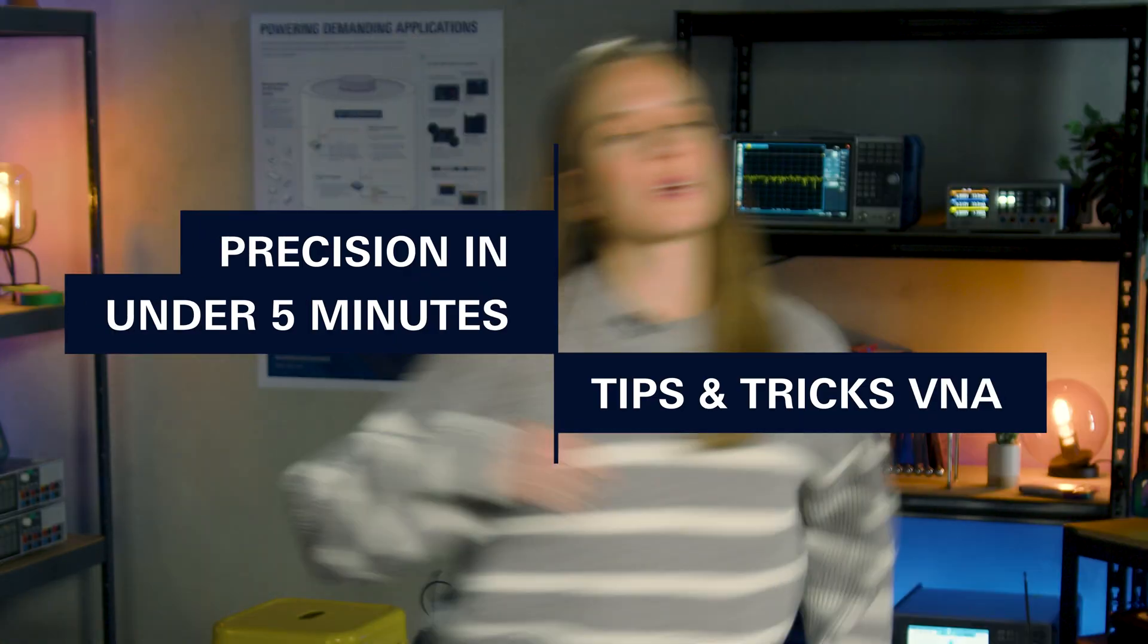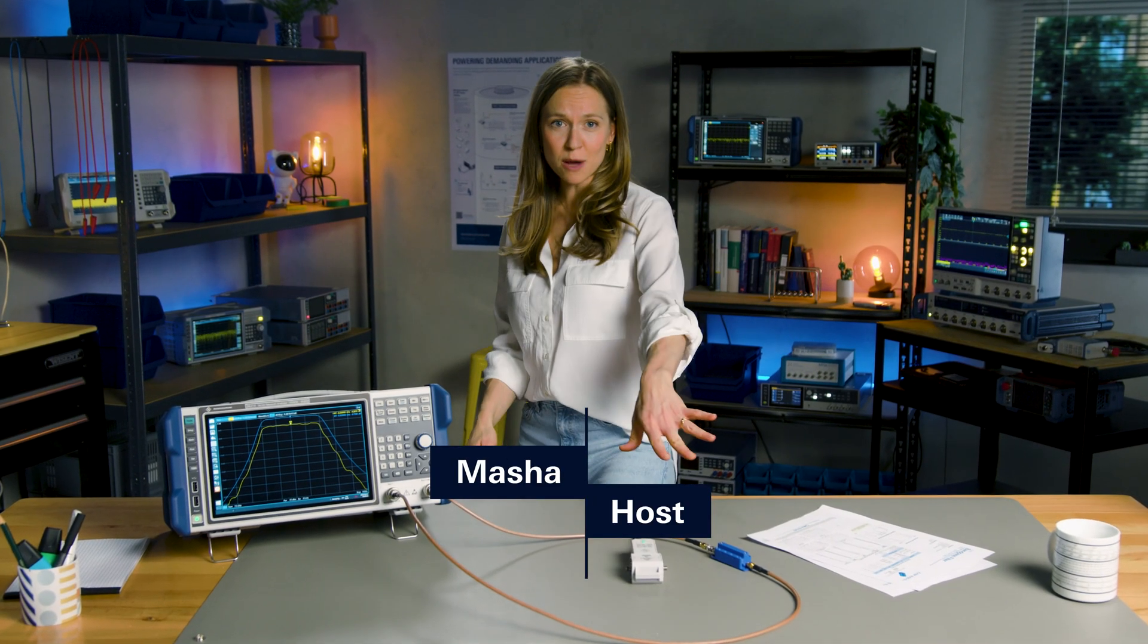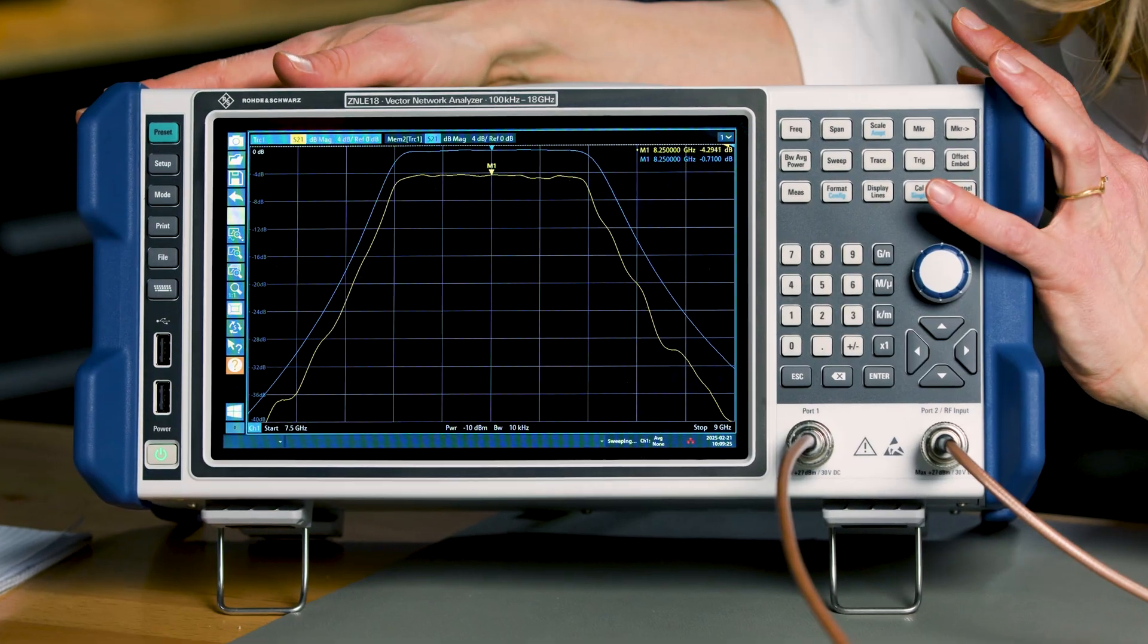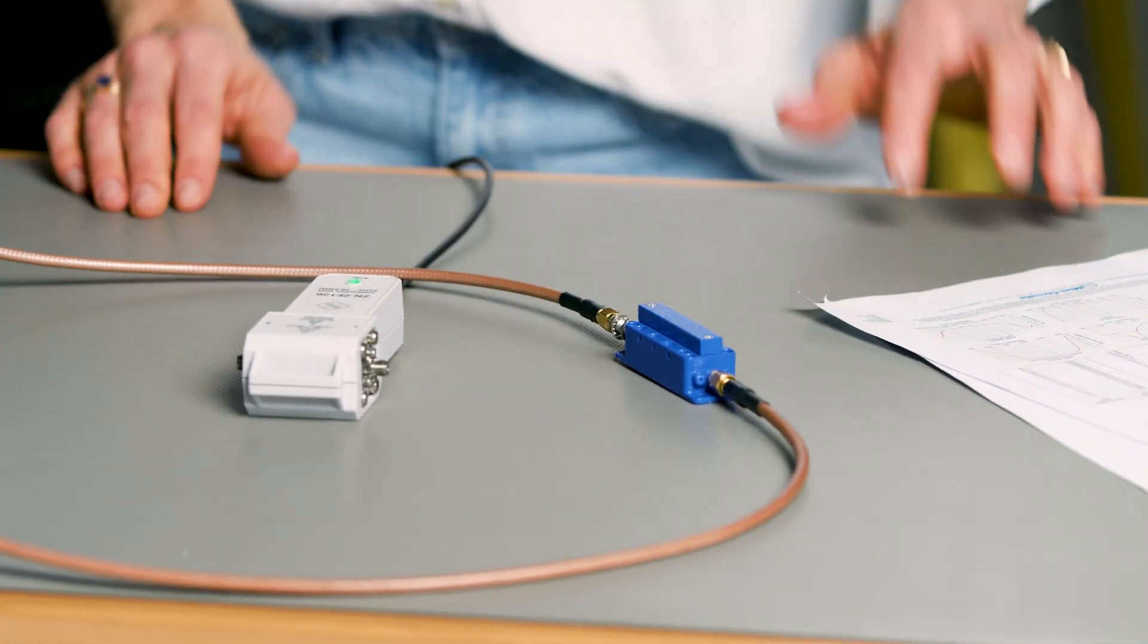This clap means business. Bring in the energy. Hello and welcome to another episode of Precision in Under 5 Minutes. I'm Masha and today we're using the Rohde & Schwarz Vector Network Analyzer to test a mini-circuits bandpass filter.